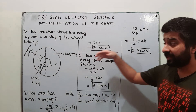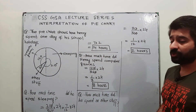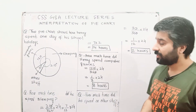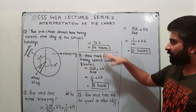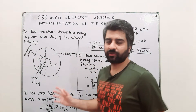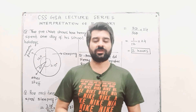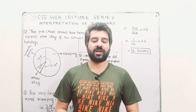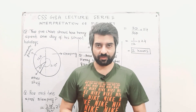The last question is: how much time did he spend on other stuff? The angle for other stuff is 30, divided by total angle 360, multiplied by 24 hours in a day. Simplification gives you 2 hours. If you count: 14 plus 8 is 22, plus 2 equals 24 hours — a complete distribution of 24 hours over the day. This is interpretation of a pie chart. In my next video I will upload a question from a past paper regarding pie charts, so keep watching. Thank you so much.